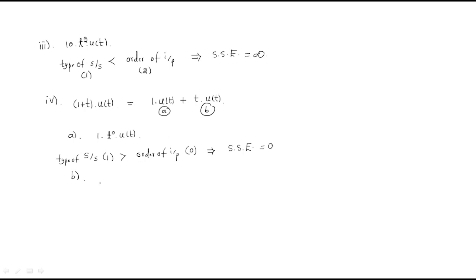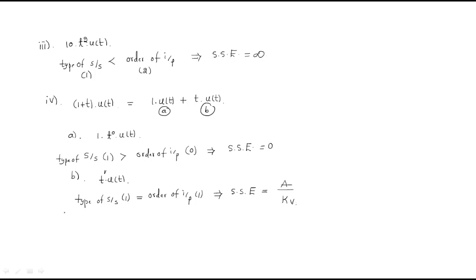For part B, the input is t·u(t) with order 1. The type of system (1) equals the order of input (1), so we have a steady-state error given by ess = a / Kv. Here the magnitude a = 1.